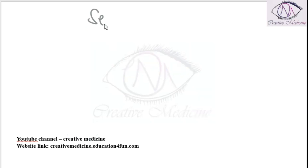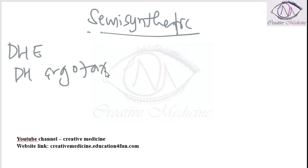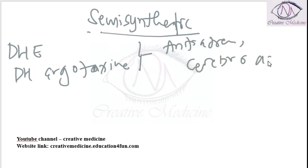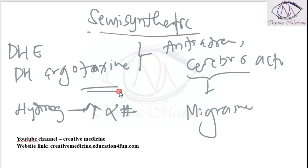Semi-synthetic ergot derivatives include dihydroergotamine and dihydroergotoxin. These are anti-adrenergic drugs with cerebroactive properties. Hydrogenation increases the alpha-blocking property. Because they are anti-adrenergic and cerebroactive, they are used in the acute attack of migraine.